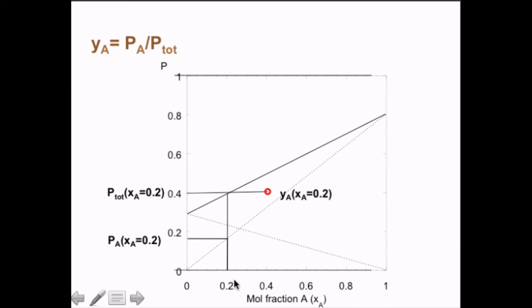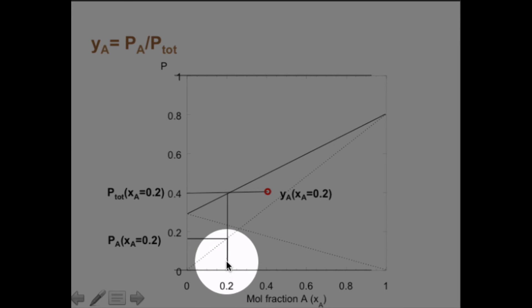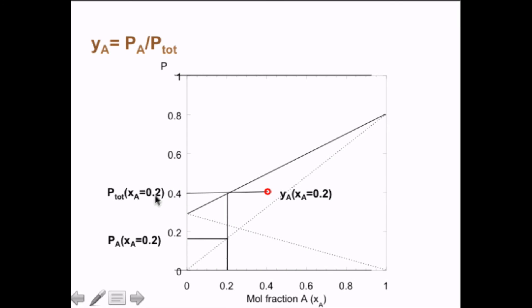To calculate y_A we go up here from 0.2 and see that the partial pressure of A is this, less than 0.2. The total pressure is slightly larger than 0.4. Then we divide the P_A with the P_tot and get this, about 0.4.